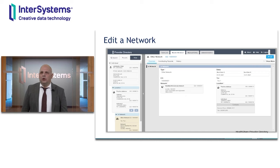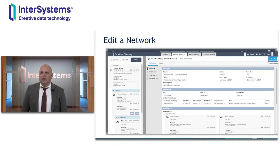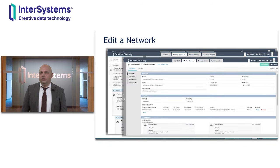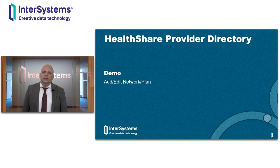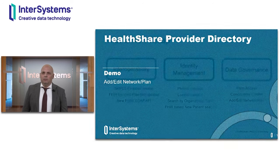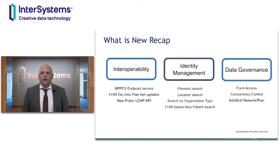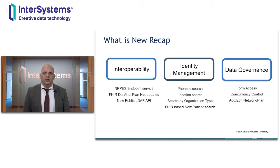If we drill down further to the network by clicking on the summary card, we can see the network record displayed. We can select to edit the network, and here we can see the fields that we can edit — plan year, date range, type of network, description, and identifiers. This concludes our demo of the add and edit network plan features. To recap on what is new in Provider Directory, our focus remains on increased interoperability, improved data management, and data governance. Better directories allow for better patient access to providers and improved provider utilization, and accurate directories can impact how plans charge patients.